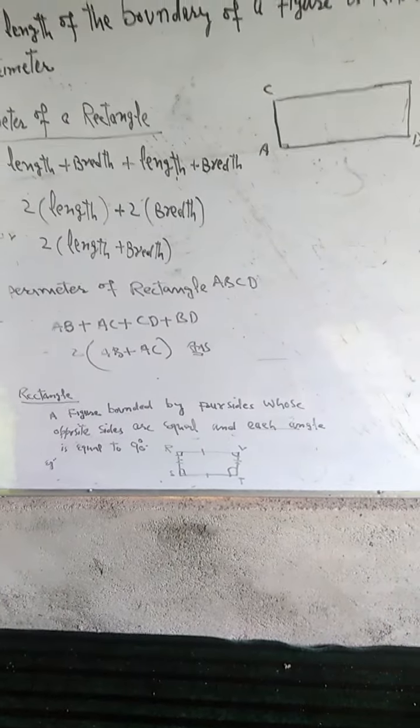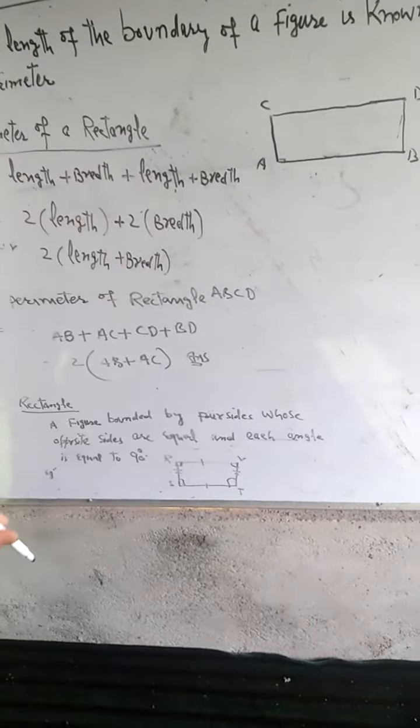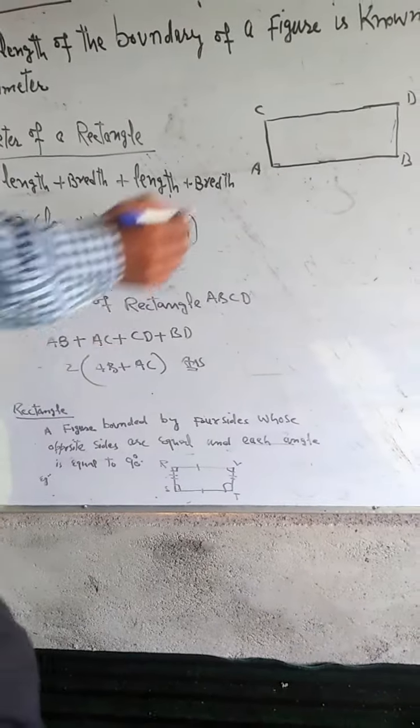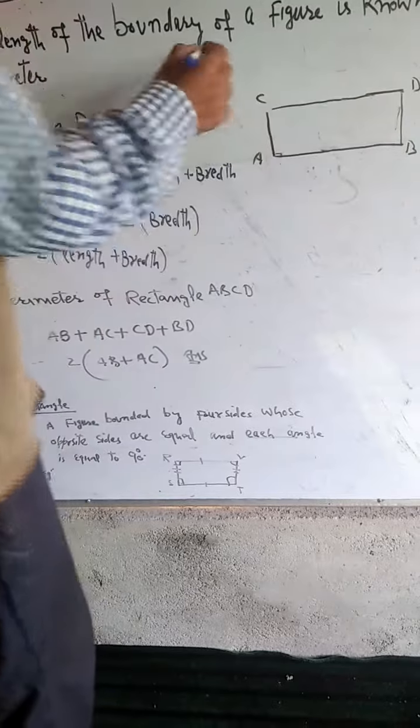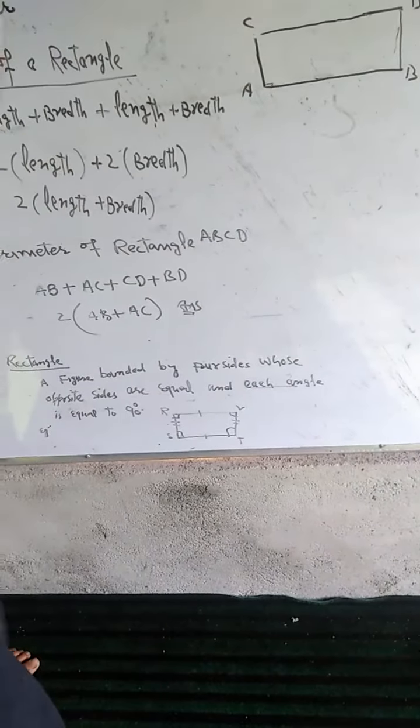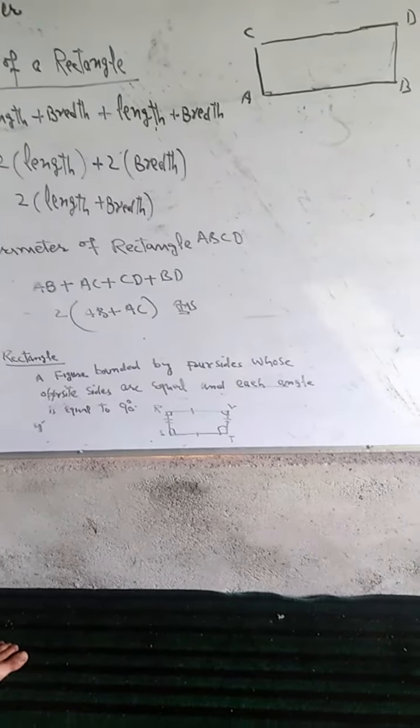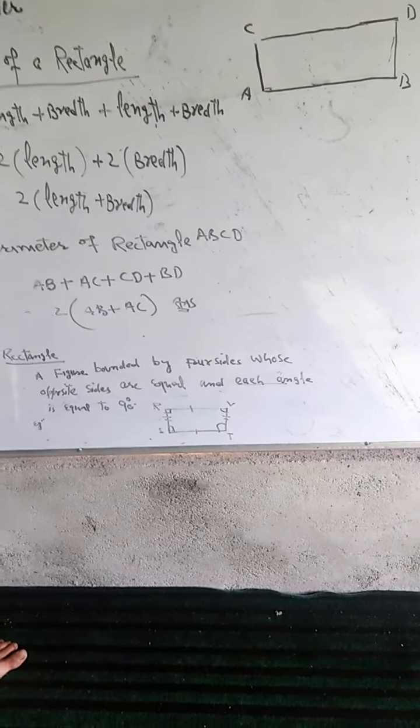These are the opposite sides. The perimeter is the sum of all sides.